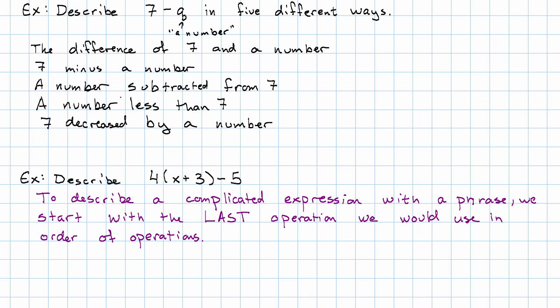To describe a complicated expression, we start by naming the last operation we would do in order of operations. So in this example, the last operation we would do is the subtraction. So the first thing I'm going to say has to do with subtraction. Now, I noticed that the thing being subtracted is very simple, five. So I'm going to just start by saying five less than.